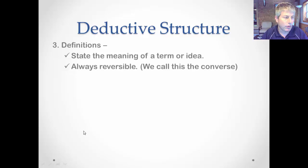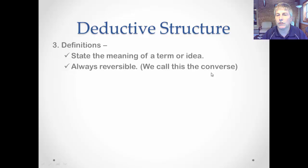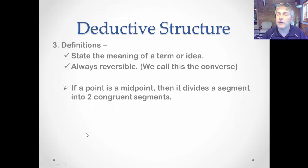The third element of deductive structure is definitions. Definitions state the meaning of a term or an idea, and definitions are always reversible — we call this the converse. When you reverse something, that is the converse, and it's important that you learn that vocabulary. Here's a definition you will need to write down and memorize: if a point is a midpoint, then it divides a segment into two congruent segments.